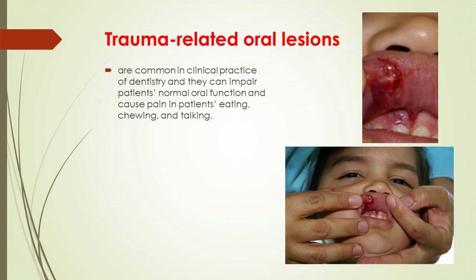Trauma-related oral lesions are common in clinical practice of dentistry and they can impair patients' normal oral function, causing pain during eating, chewing, and talking. An injury to the oral mucosa can result from physical, chemical, or thermal trauma, such as accidental tooth bite, hard food, sharp edges of the teeth, hot food, or excessive tooth brushing. Some injuries can also be caused by iatrogenic damage during dental treatment or other procedures related to the oral cavity.